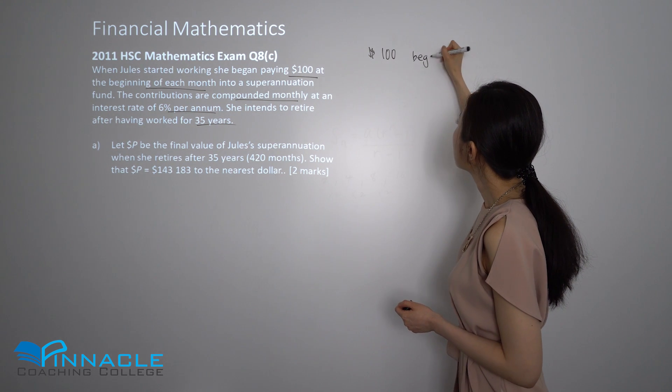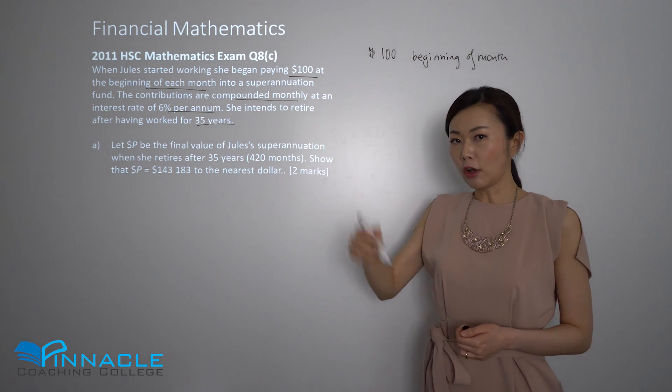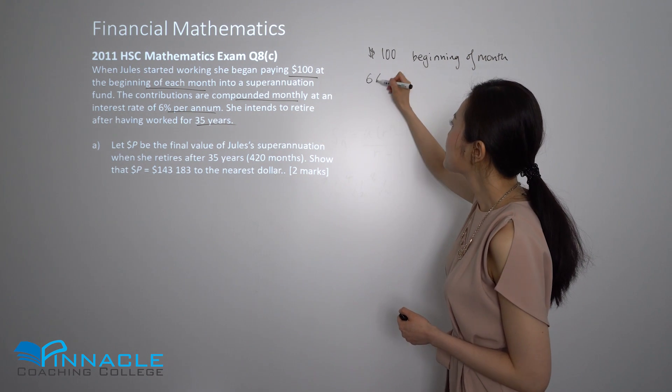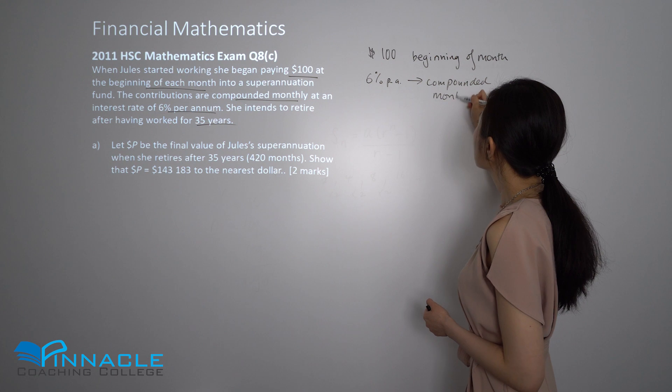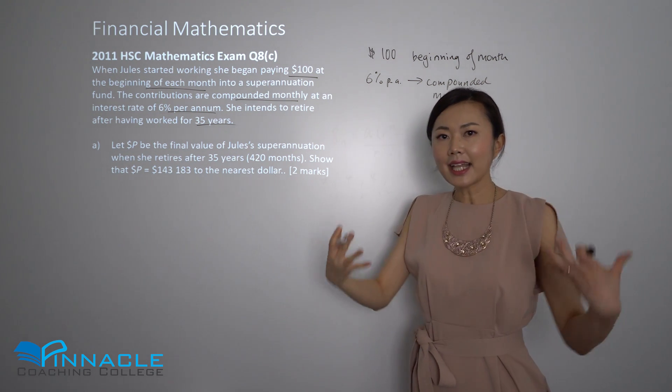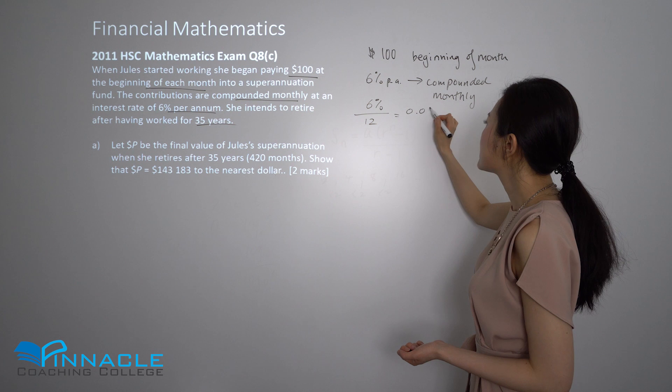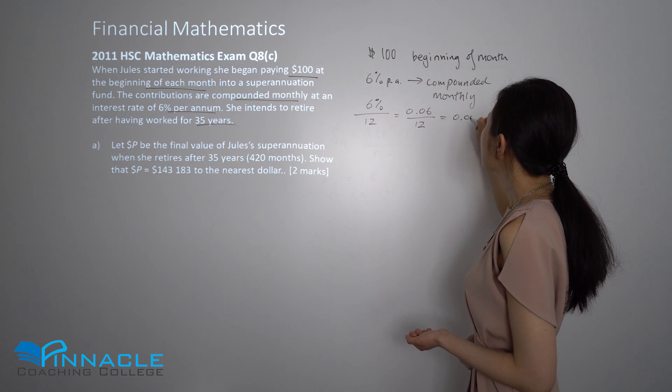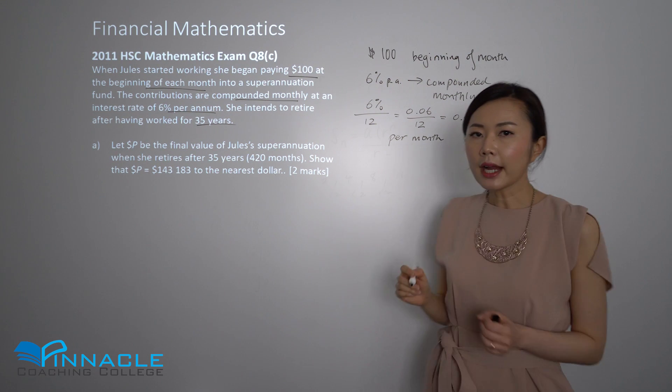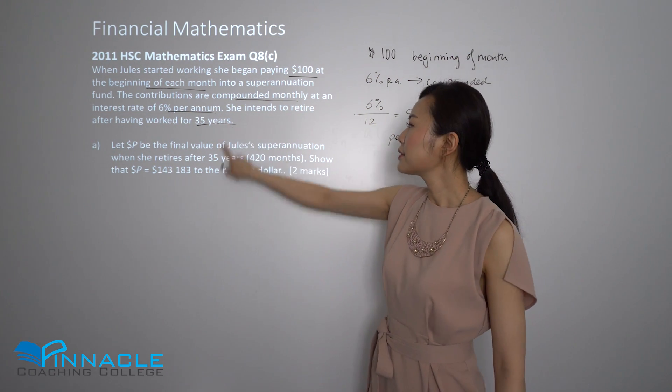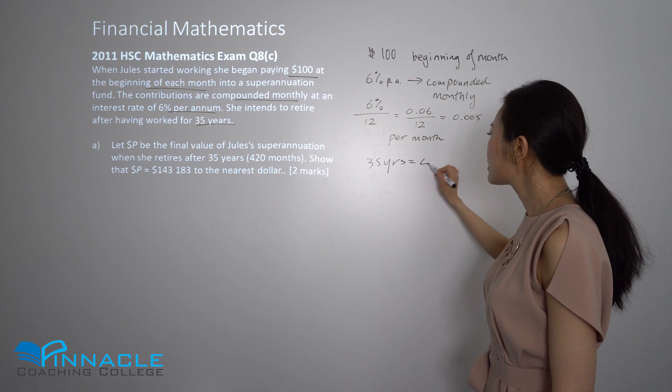Just noting down the key information here - we've got $100 beginning of the month, very important to note that. You've got a 6% per annum rate but compounded monthly, so immediately I'll take that and change it to a monthly rate. 6% divided by 12, or 0.06 divided by 12, will be 0.005, so that's the monthly rate we're going to use per month. Finally, the number of years is 35 years. The question tells you how many months that is - 35 years which is equivalent to 420 months.